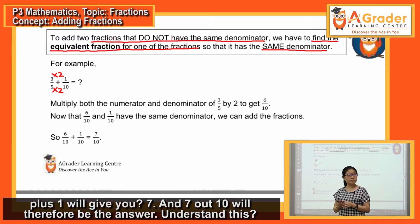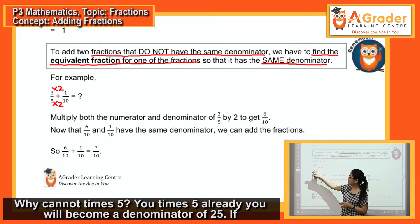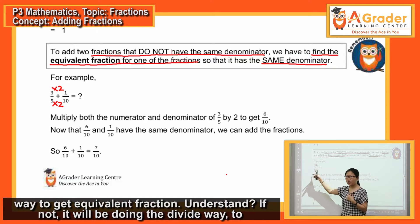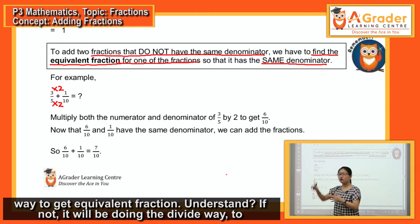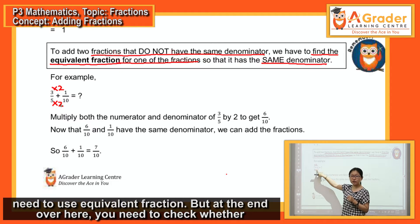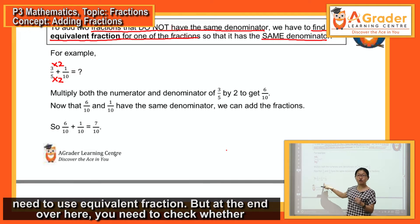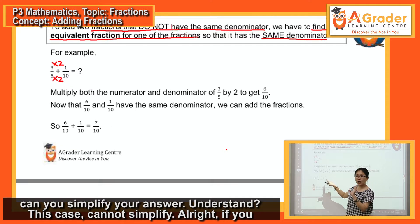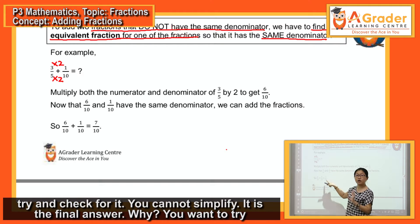Why can't you times 5? If you times 5 to the denominator, it becomes 25 — that's wrong. You can only use the times method to get an equivalent fraction. Alternatively, you use the divide method to get the simplest form. When doing your work, use equivalent fractions, and at the end check whether you can simplify your answer. In this case, 7 out of 10 cannot be simplified, so this is the final answer.